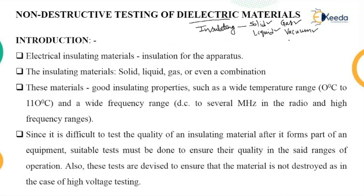The insulating material can act as an insulating material or as an arc-quenching material. Many times it is also used to decrease the temperature, so we can call it a cooling material. The insulating materials may be solid, liquid, gas, or even a combination — such as paper impregnated in oil, which we call a mixed material.